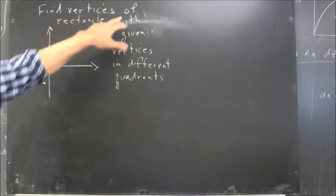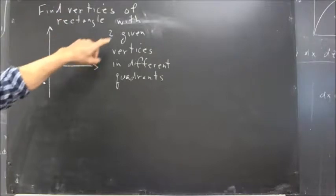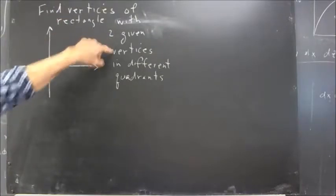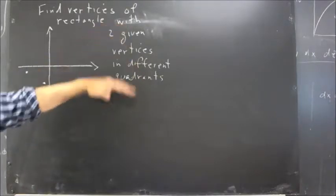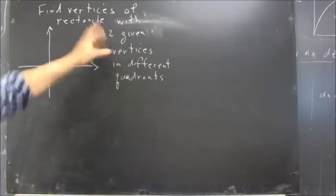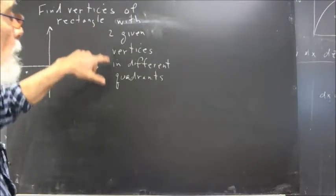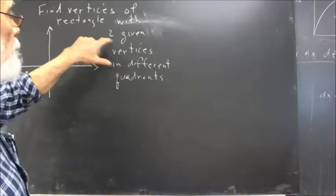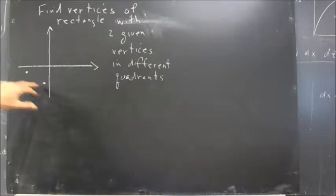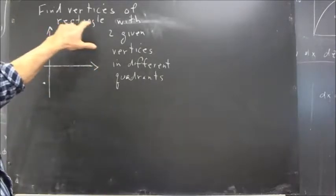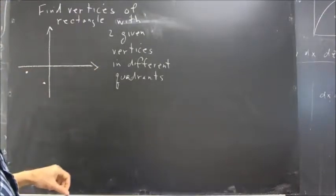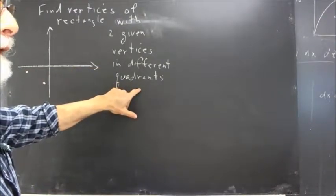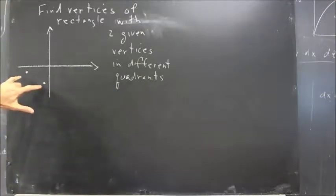We want to find vertices of a rectangle that contains two given vertices in different quadrants. These vertices are to be in different quadrants. I didn't state the problem in its entirety — too much would take too much board space. The given vertices we'll regard as being here, and the other vertices need to be in different quadrants — both from these two vertices and from one another.